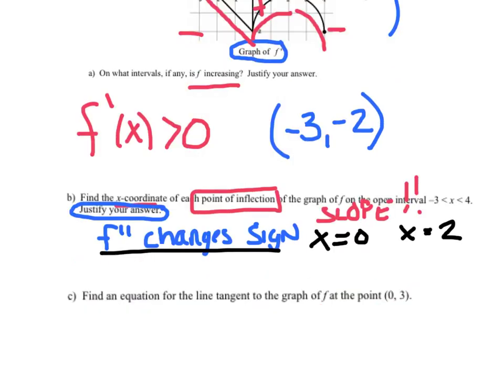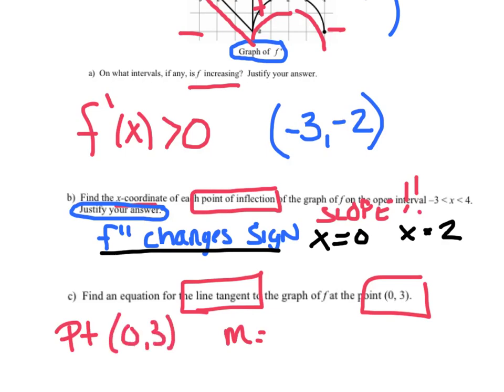Question C: Find an equation for the tangent line to the graph of f at the point (0, 3). To write the equation of a line, I need the point slope formula. I need a point and I need a slope. They were generous enough to tell me the whole point, so basically all you need is the slope.